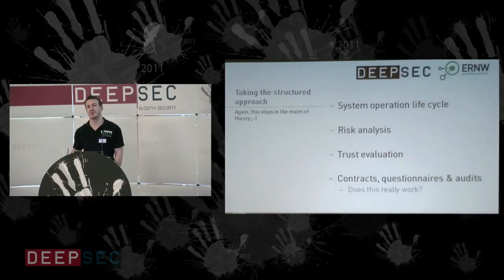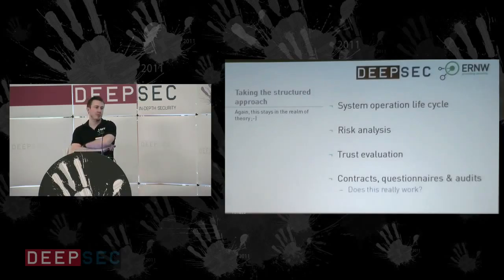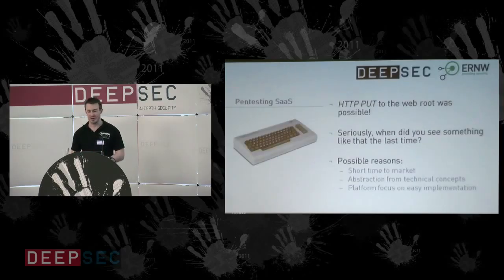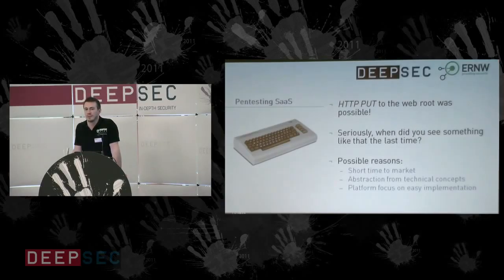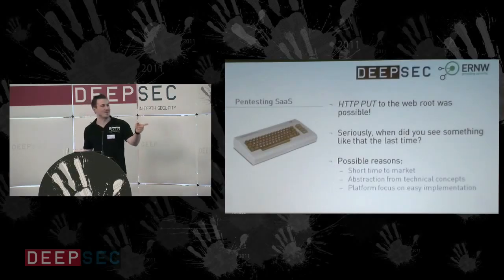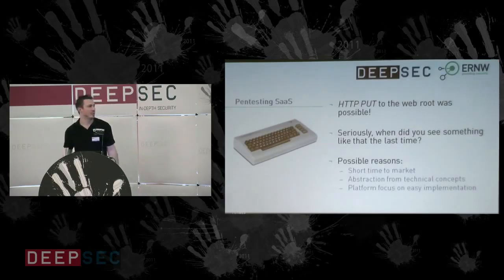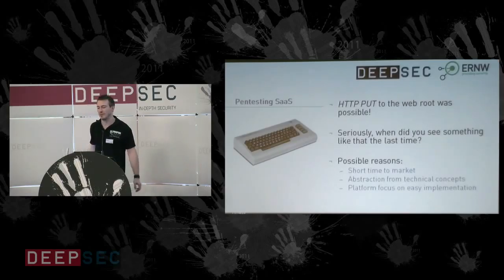These findings can be abstracted to more general conclusions. To close the findings, guess what the cloud service provider did? They put a web application firewall in front of it. All we had to do was encode a PUT request in another way and we still had the same finding. But this is just a short side note.